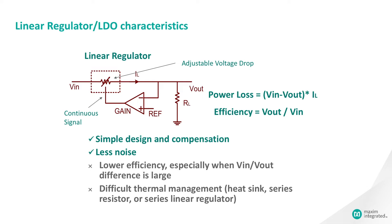In general, the advantages of linear regulators are simplicity, low noise, no EMI issues, and fast design. The major shortcomings of this type of regulator are low efficiency, especially when Vout is much smaller than Vn, and difficult thermal management due to the heat generated by the power loss.